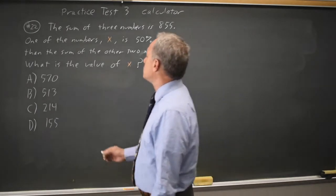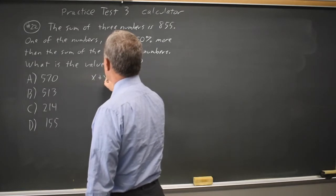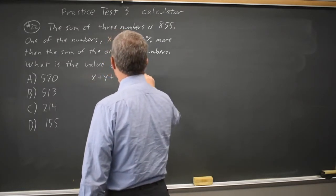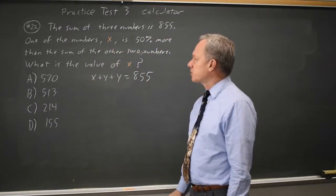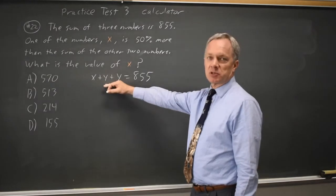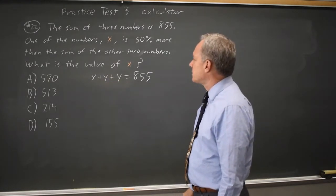I'm going to call the average of the other two numbers y. We have x plus y plus y equals 855 and in my mind I'm informally treating it as if the two remaining numbers are both equal to y because that will not change the answer. It makes it easier to think about.